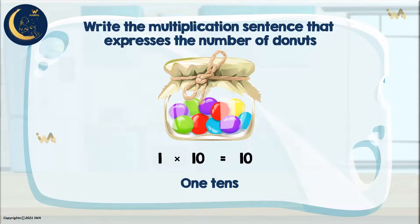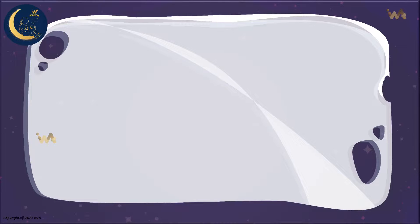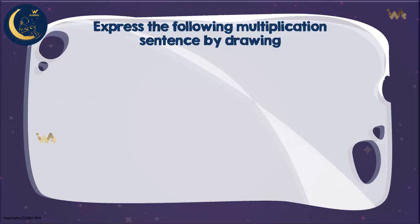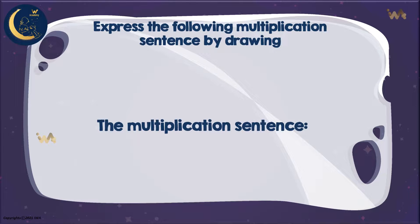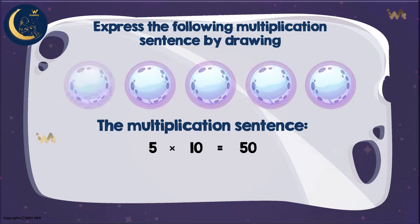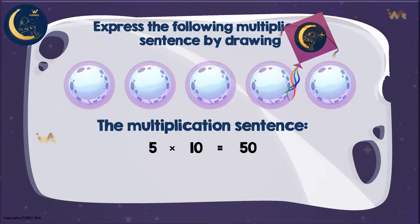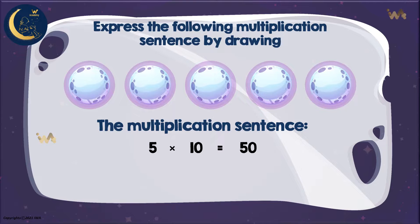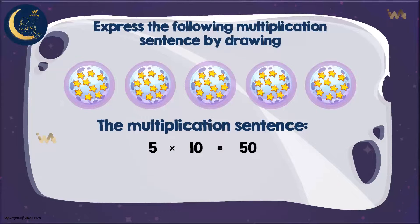Now we want to express the following multiplication sentence by drawing. Let's read it: five multiplied by ten equals fifty. What does the number five represent? The number of groups — so we have five groups. What does the number ten represent? The number of items in one group. So we will put ten items in each group. Let's draw stars, for example — ten here, here, here, here, and here. Five multiplied by ten equals fifty. It also reads as five tens.